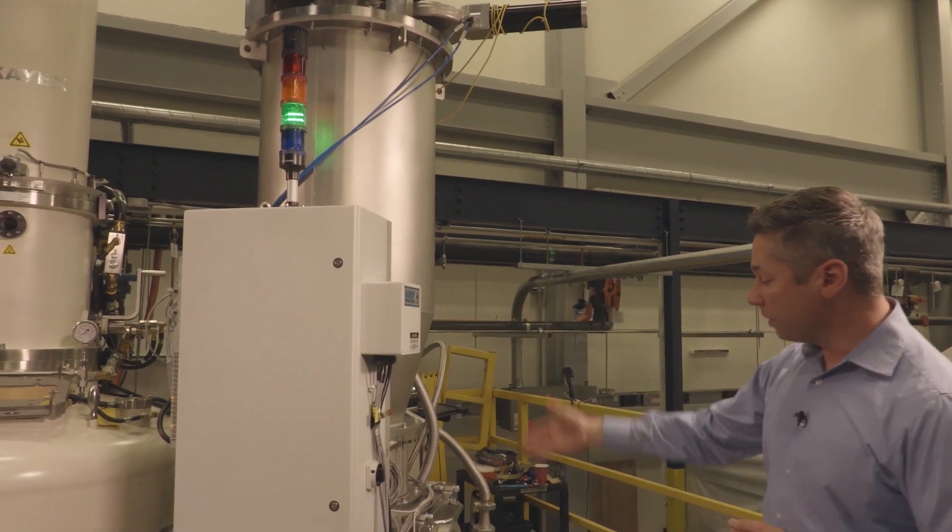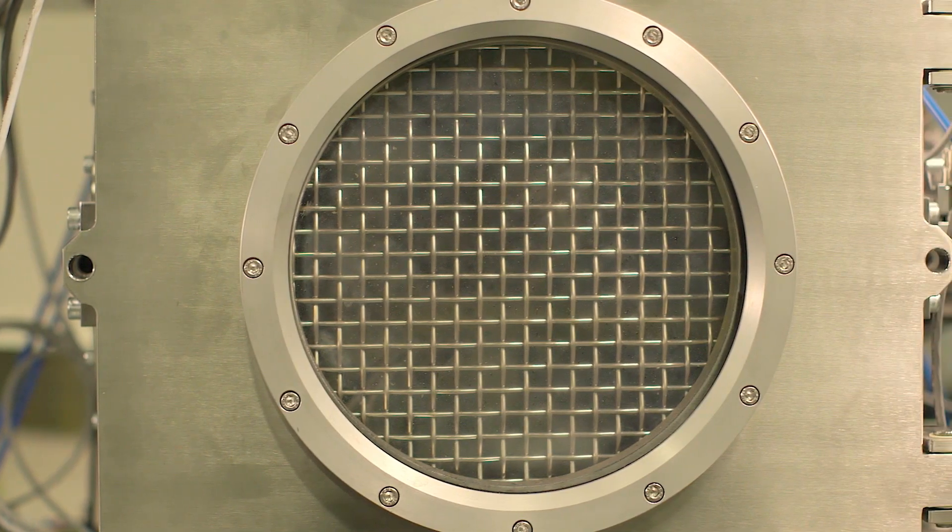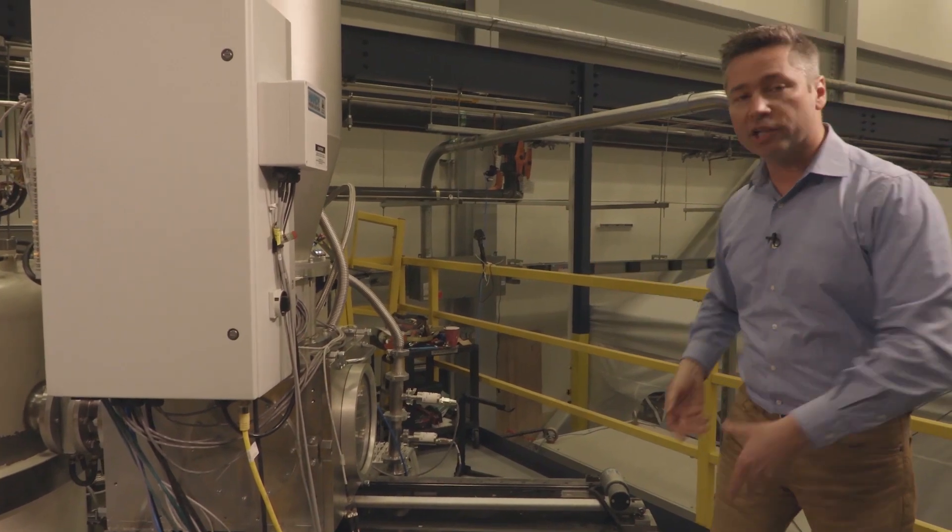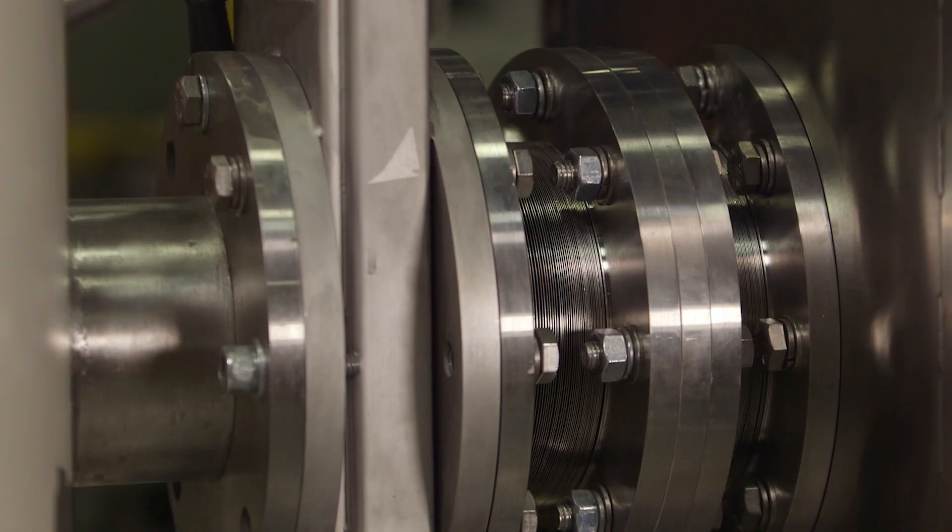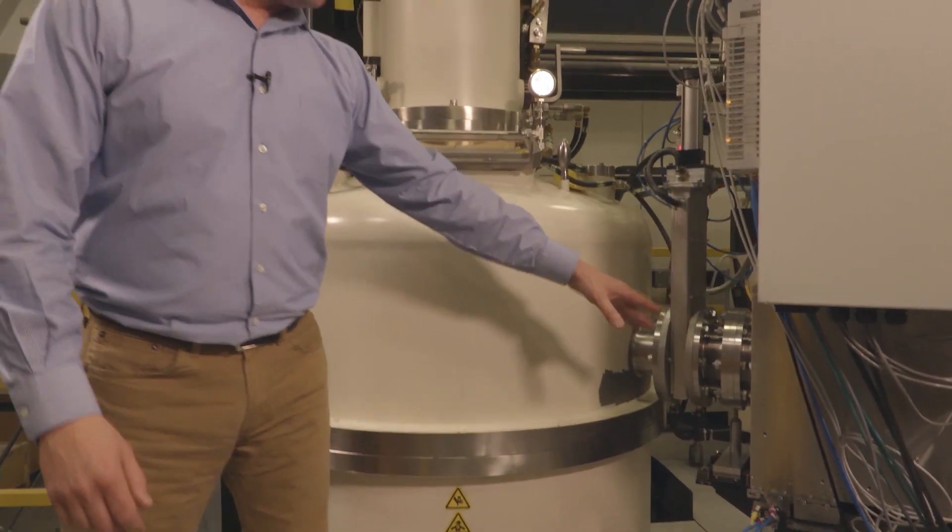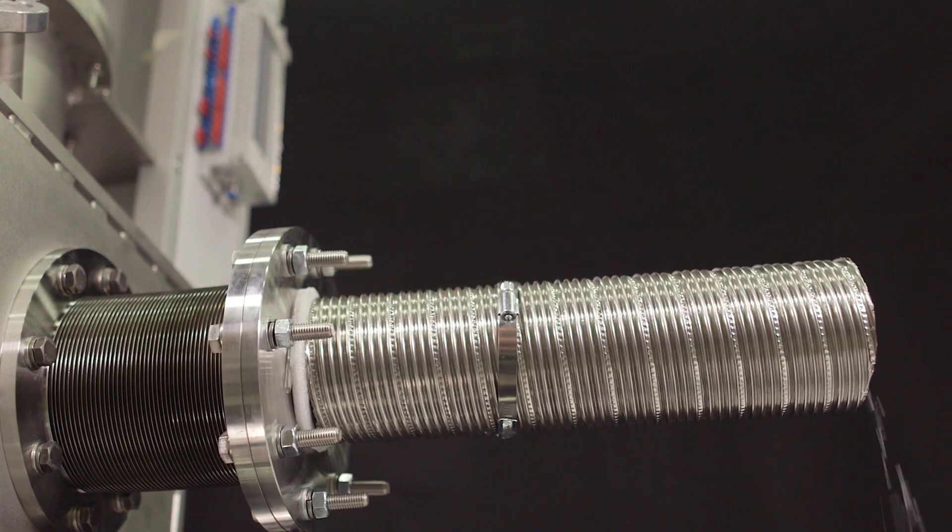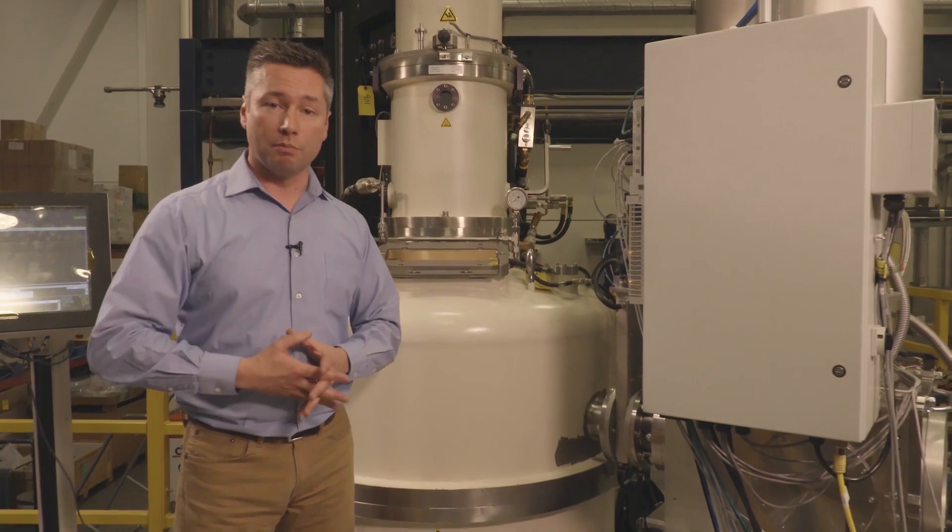That hopper design supplies the feed material into the chamber, which transports the feed down this feed tube. From that feed tube it goes into the puller, into the crucible, into the melt.